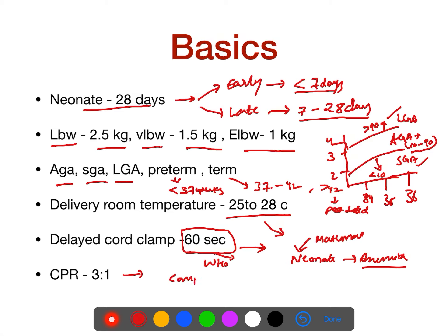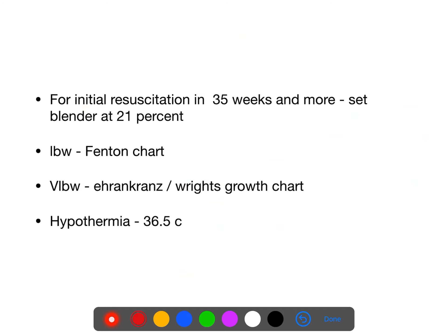What is the compression to ventilation ratio in a neonate? It is 3:1 — for every three compressions, one ventilation is done. While doing resuscitation, for babies more than 35 weeks we use 21% oxygen. For babies less than 35 weeks, we use 21% to 30% oxygen.